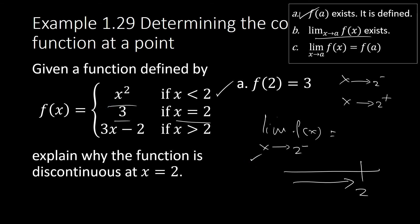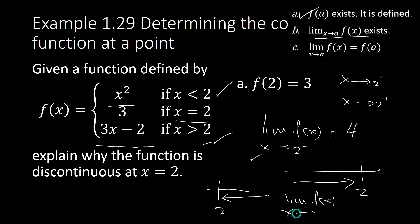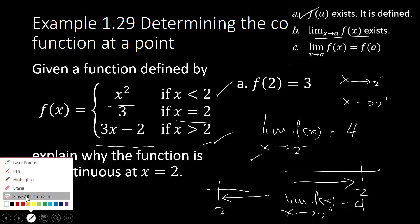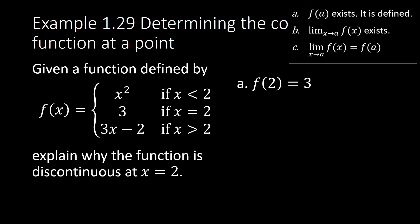The limit as x approaches 2 from the left equals 2 squared, which is 4. How about when x approaches 2 from the right? That means x values are greater than 2, so we use that piece: the limit is 3(2) − 2, which equals 4. The one-sided limits are equal — they are both equal to the same real number 4. Conclusion: the limit exists as x approaches 2.